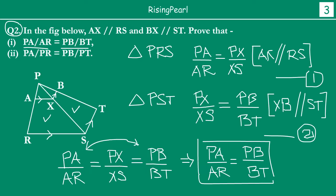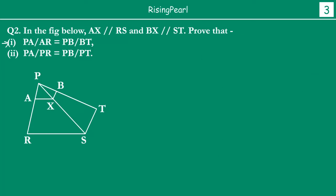Now this is question number 2. We were at question number 2 in the last webisode. We have solved part 1. So we will start out with the second proof — how can we prove PA by PR equal to PB by PT. Let's just draw these parallel lines here.